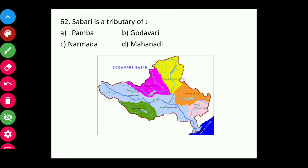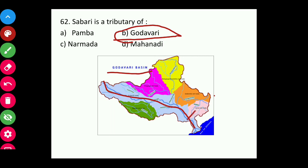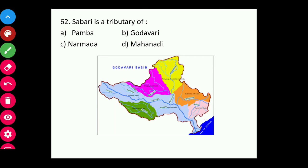Question sixty-two: Sabari is a tributary of which river? The answer is Godavari. You can see from the map the Godavari Basin with all its tributaries, including Sabari.